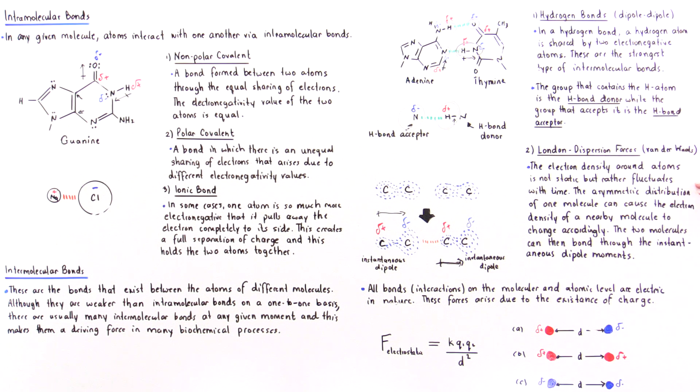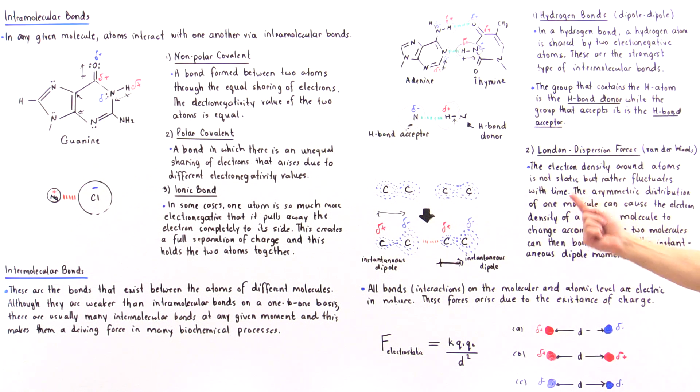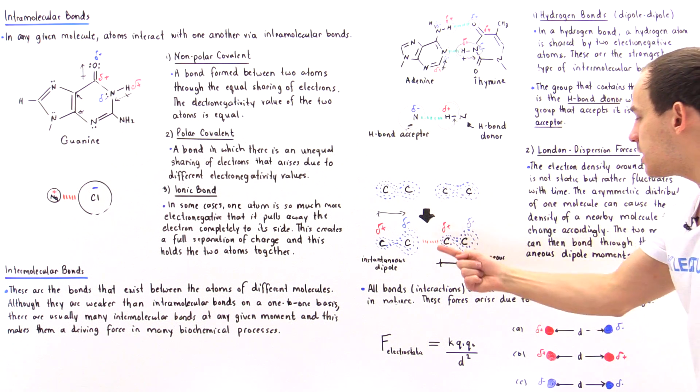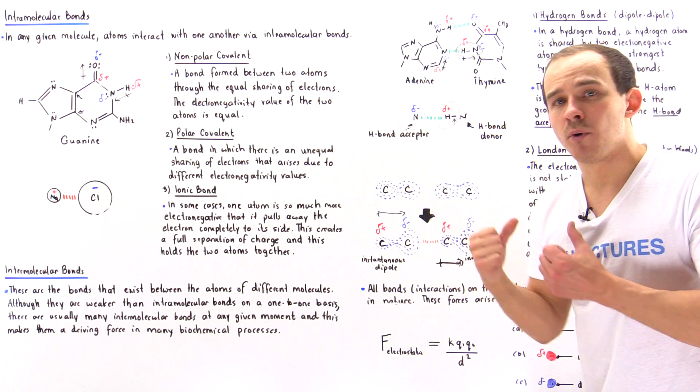The asymmetric distribution of one molecule can cause the electron density of a nearby molecule to change in accordance with the law of repulsion.